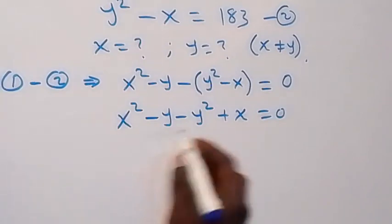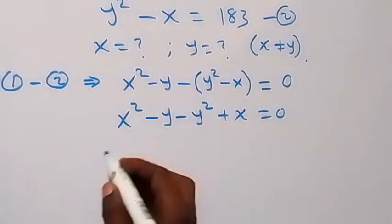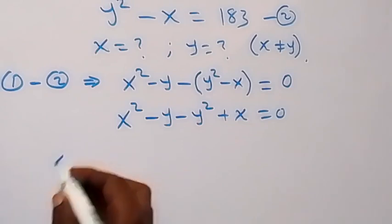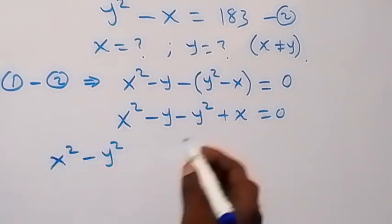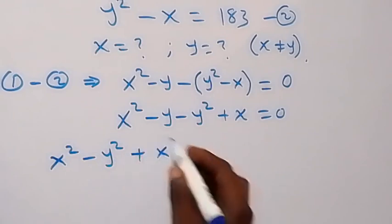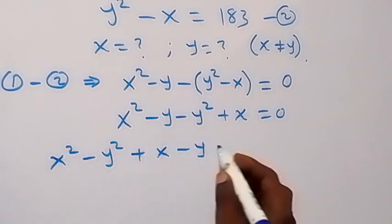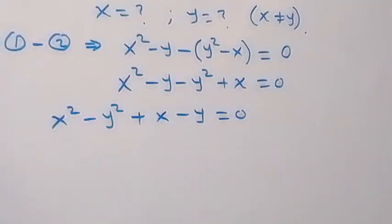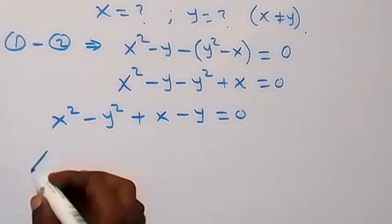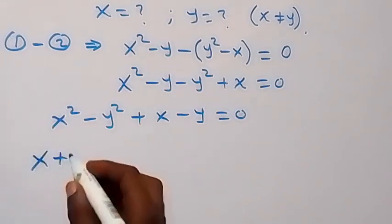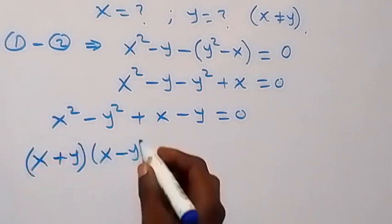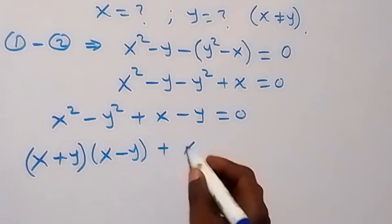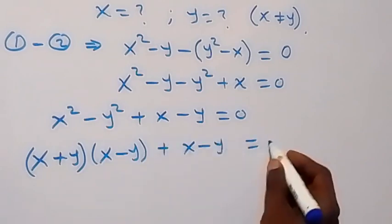From here, we open the bracket and this becomes x squared minus y squared, then plus x minus y, equals to 0. We take the squared terms together, so we have x squared minus y squared, then plus x minus y equals to 0. We recognize this as a difference of two squares, so this will be x plus y times x minus y, then plus x minus y, which is equal to 0.